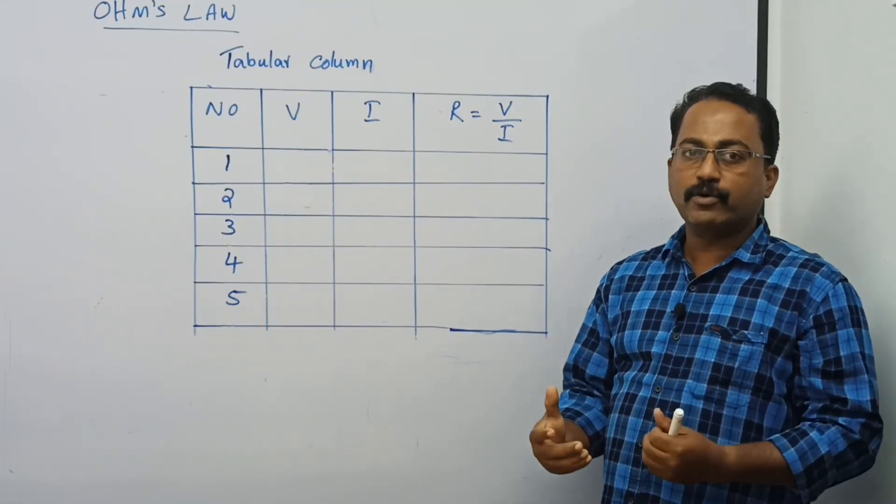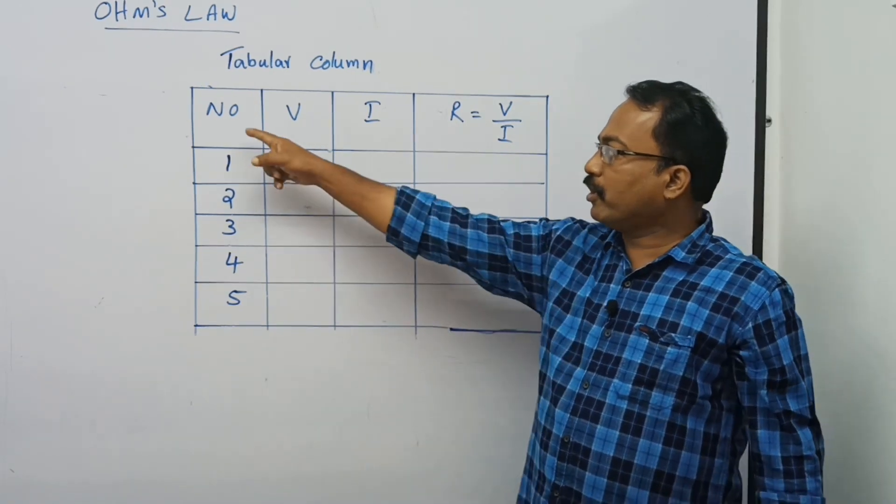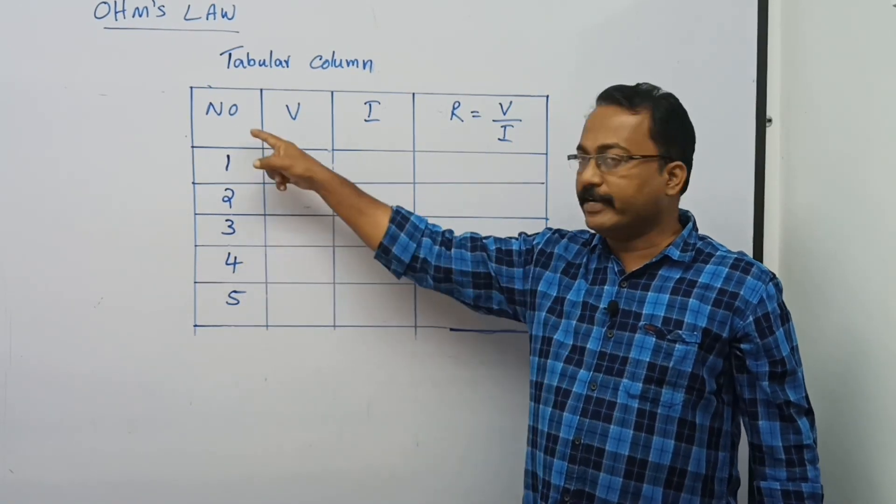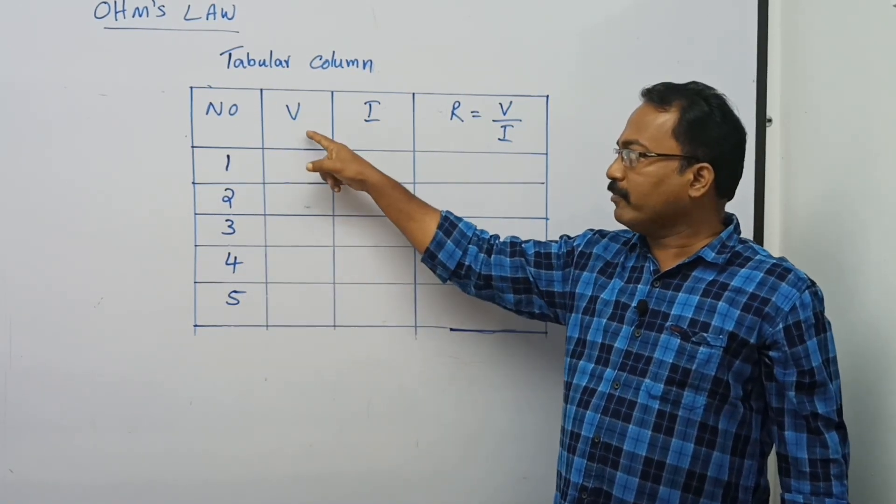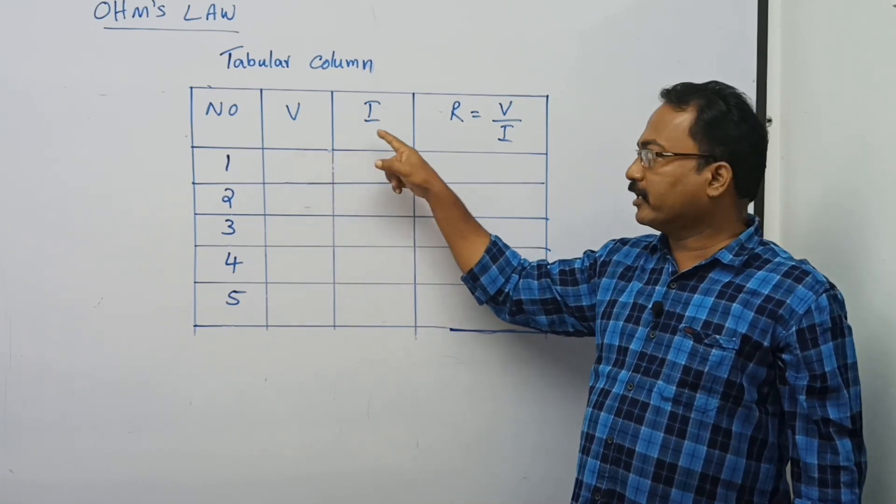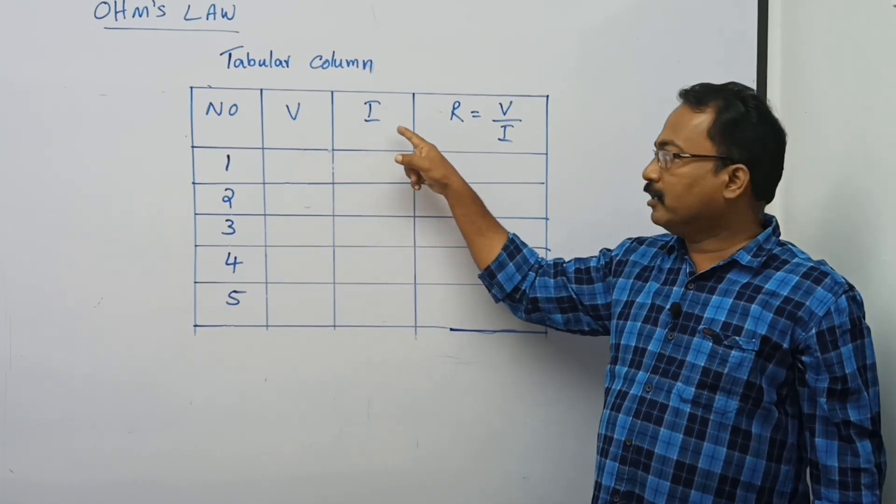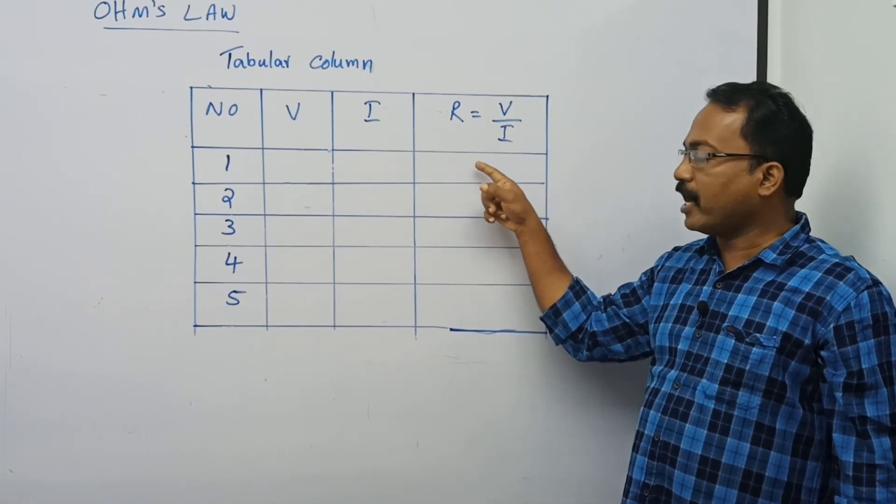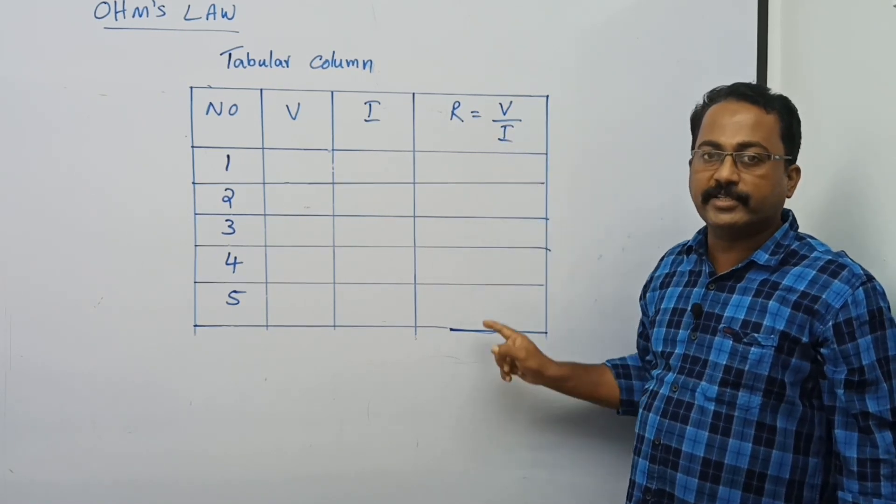Now let us see the tabular column. The first column is the number, we have to take five readings. The next column is for voltage, the next column for current, and the last column R = V/I. Here we calculate the resistance in each case.